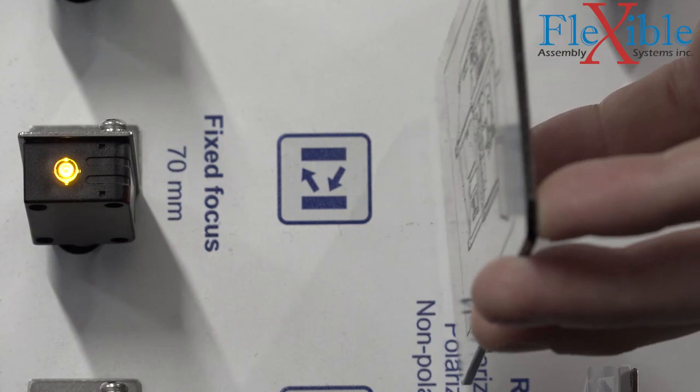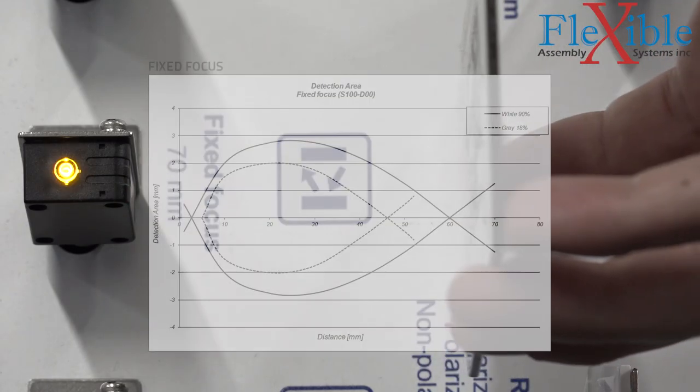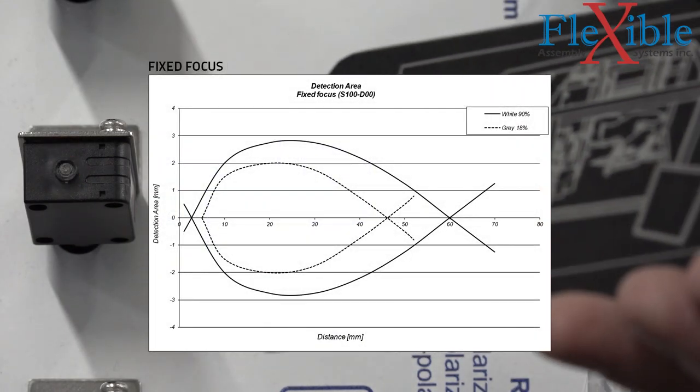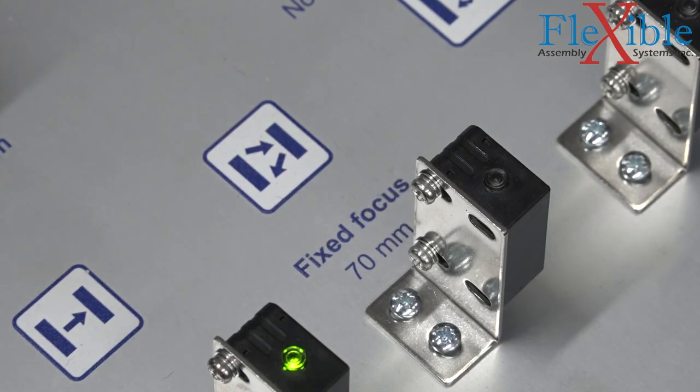The S100 fixed focus sensor can only see up to 70mm. However, when we check the diagram, we see that the maximum detection range for the gray card and the white card are much closer to each other. The reflective index of the target has less impact on its ability to be detected.